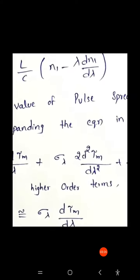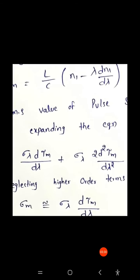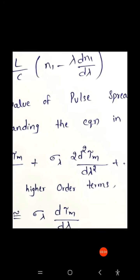The pulse delay Tm due to material dispersion in a fiber of length L is expressed as: Tm = (L/c) × (N₁ − λ · dN₁/dλ).